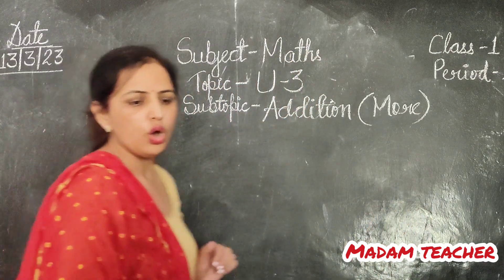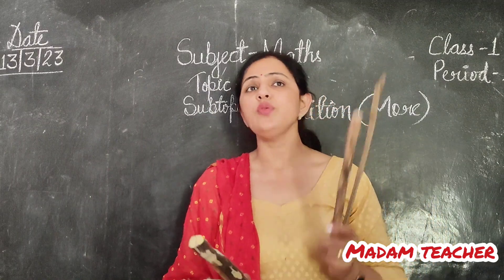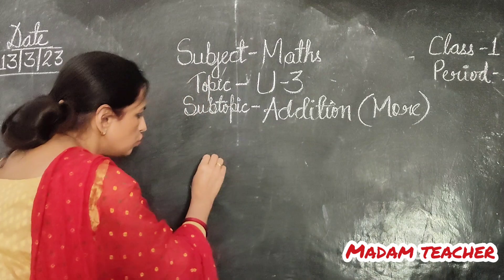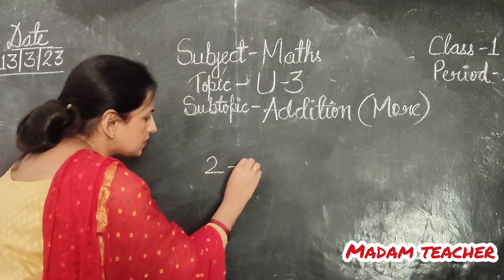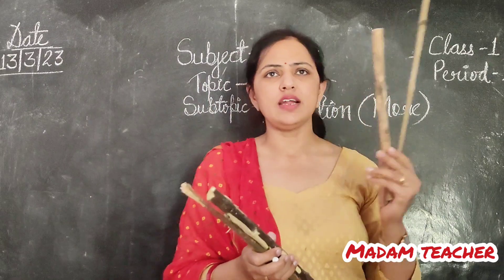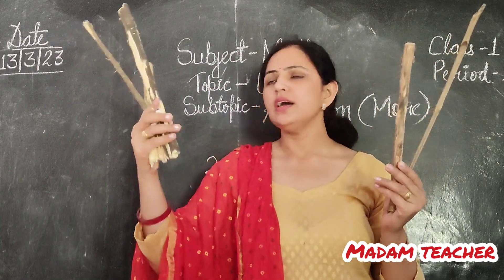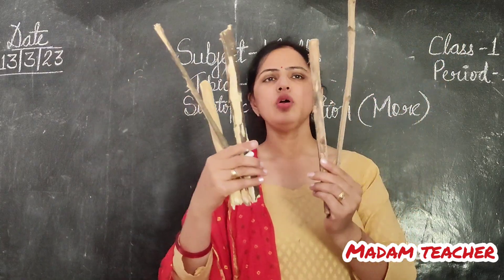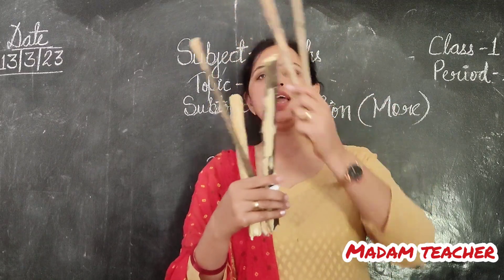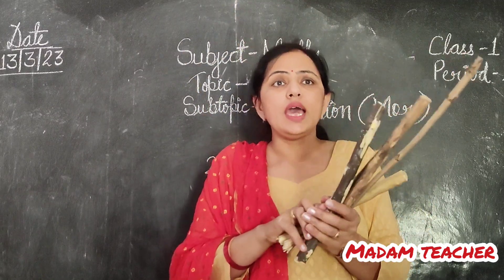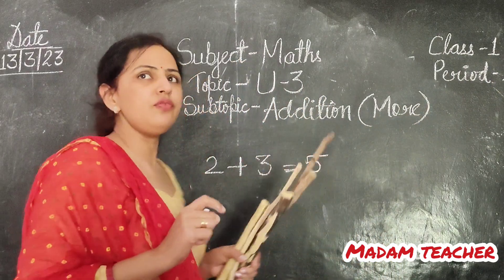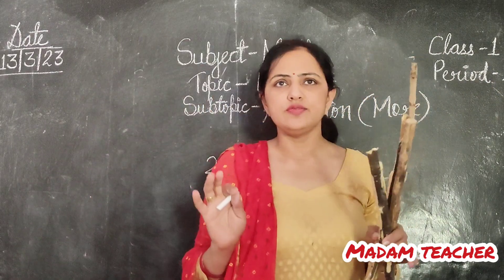My question was: what will come when we add 2 and 3? 2 plus 3. See, how many sticks are there? 2 and here 3. So — 1, 2, 3, 4, 5. Now I have 5 sticks.